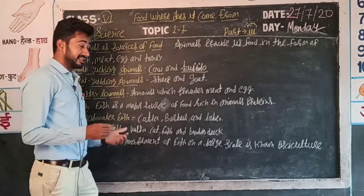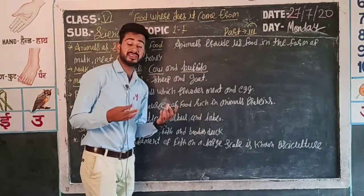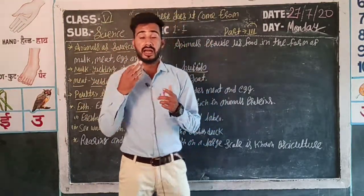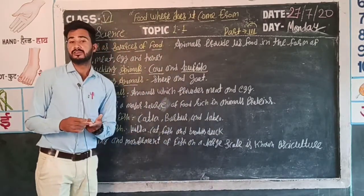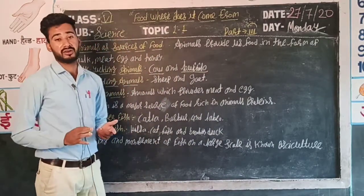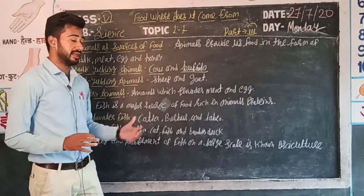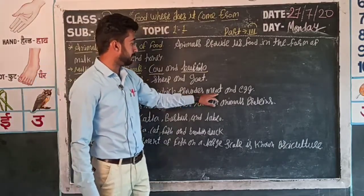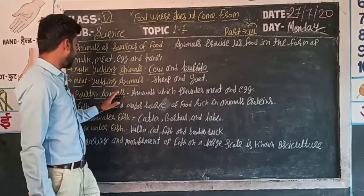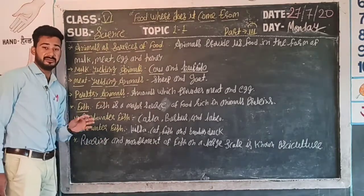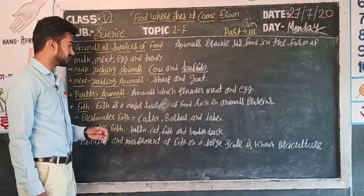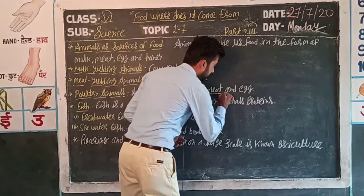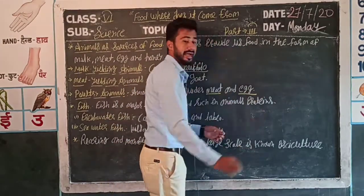Poultry animals - these are those animals which provide us meat and egg. That is why we call them poultry animals. Clear students - poultry animals provide both meat and egg.